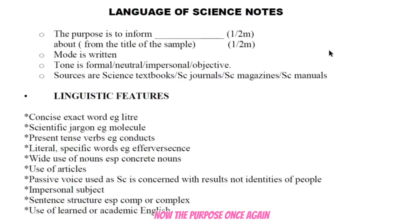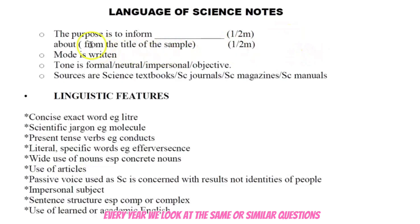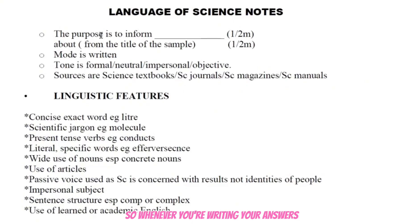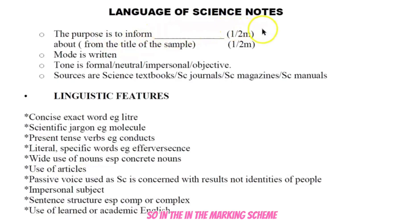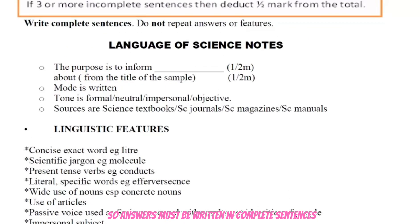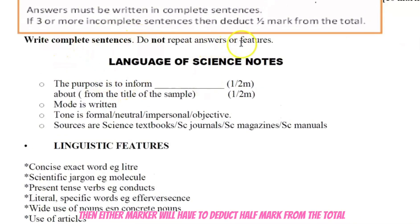Let's begin. The purpose is one of the frequently asked questions — every year we look at the same or similar questions, but the samples change. The purpose is the 'why' — why is this register given to you? It can be to inform or to instruct. When writing answers in the exam, always write in full sentences. The marking scheme states: write complete sentences, do not repeat answers or features. If three or more sentences are incomplete, the marker will deduct half a mark from the total.